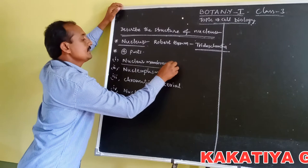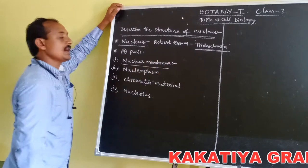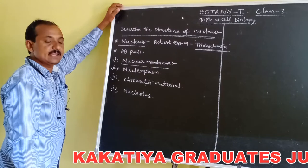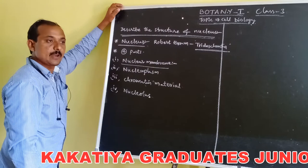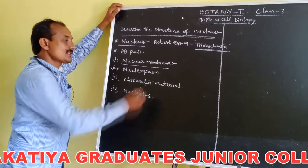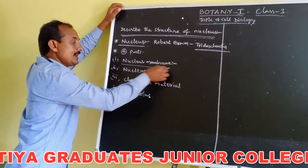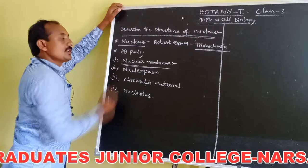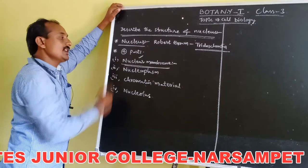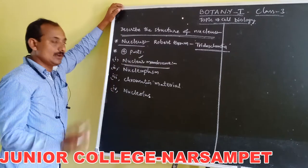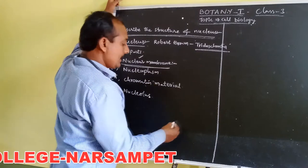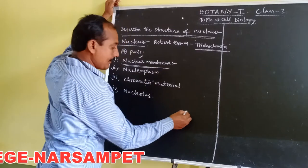First one is nuclear membrane. Each nucleus is surrounded by an envelope or a membrane called the nuclear membrane. The nucleus is surrounded by two membranes: the outer membrane and the inner membrane.